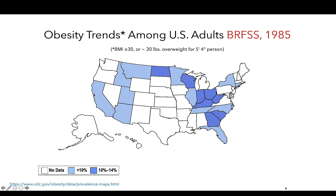Here we can see that in 1985, less than half of states even had obesity-related data. For the most part, these states were reporting that less than 10% of adults had a BMI classified as obese, whereas approximately half reported 10 to 14% of adults had BMIs classified as obese.